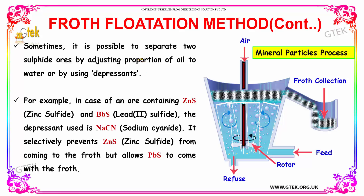Sometimes it is possible to separate two sulphide ores by adjusting the proportion of oil to water or by using depressants. For example, in the case of an ore containing zinc sulphide and lead sulphide, the depressant used is sodium cyanide. It selectively prevents zinc sulphide from coming into the froth but allows lead sulphide to come with the froth.